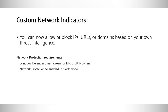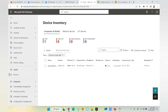The second feature is custom network indicators. Using custom network indicators, we can block or allow IPs, URLs, or domains based on threat intelligence. Unlike web filtering, which is category-based, custom network indicators let you block specific IP addresses or URLs. If you have a specific requirement to block certain IPs or URLs rather than an entire category, use custom network indicators. To configure this, you need to enable Windows Defender SmartScreen and network protection in block mode, which can be done using Group Policy.